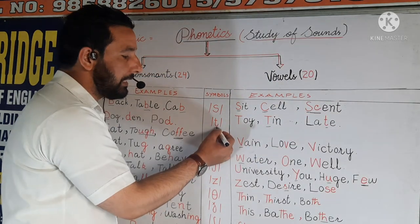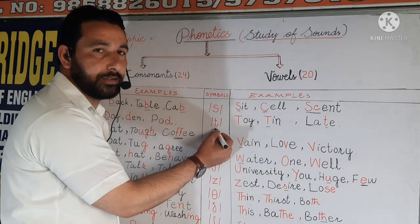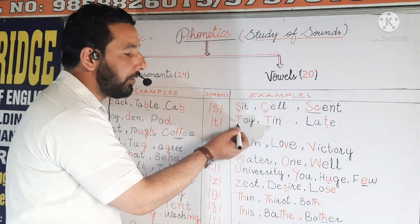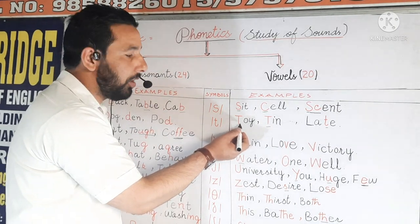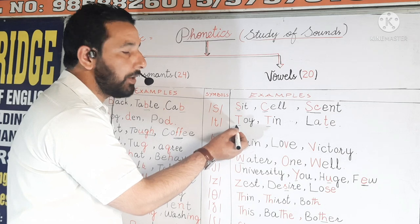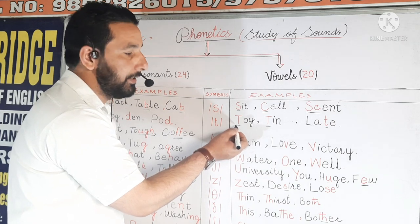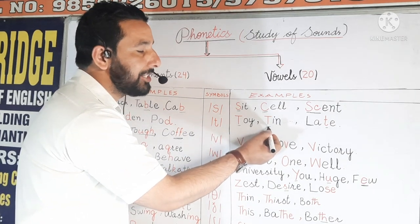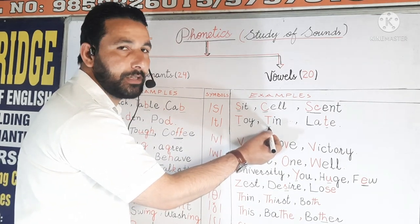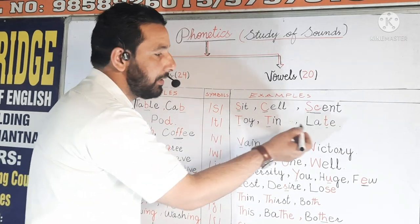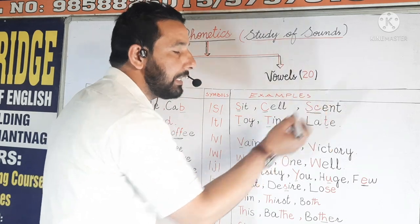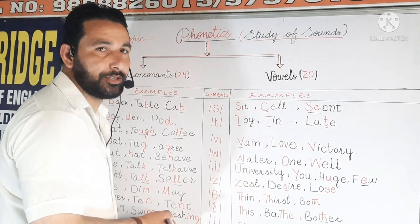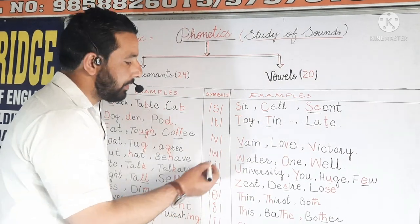Next is T. For example, we have 'toy' — this sound is T. And next is 'tin' — the sound is T. And next is 'late' — the sound is T.